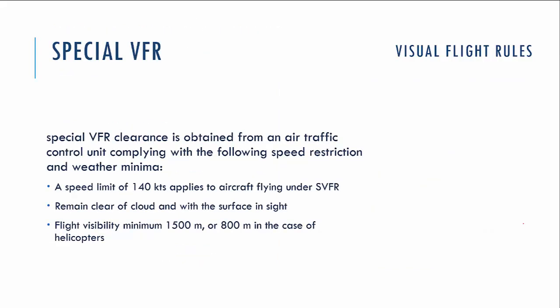Let's switch to Special VFR — visual flight rules. You can fly under Special VFR if you get clearance from the ATC air traffic control unit. You also have to comply with a speed limit of 140 knots. You have to stay clear of clouds and always maintain sight of the surface. Under Special VFR, flight visibility is reduced to a minimum of 1500 meters, or 800 meters in the case of a helicopter.